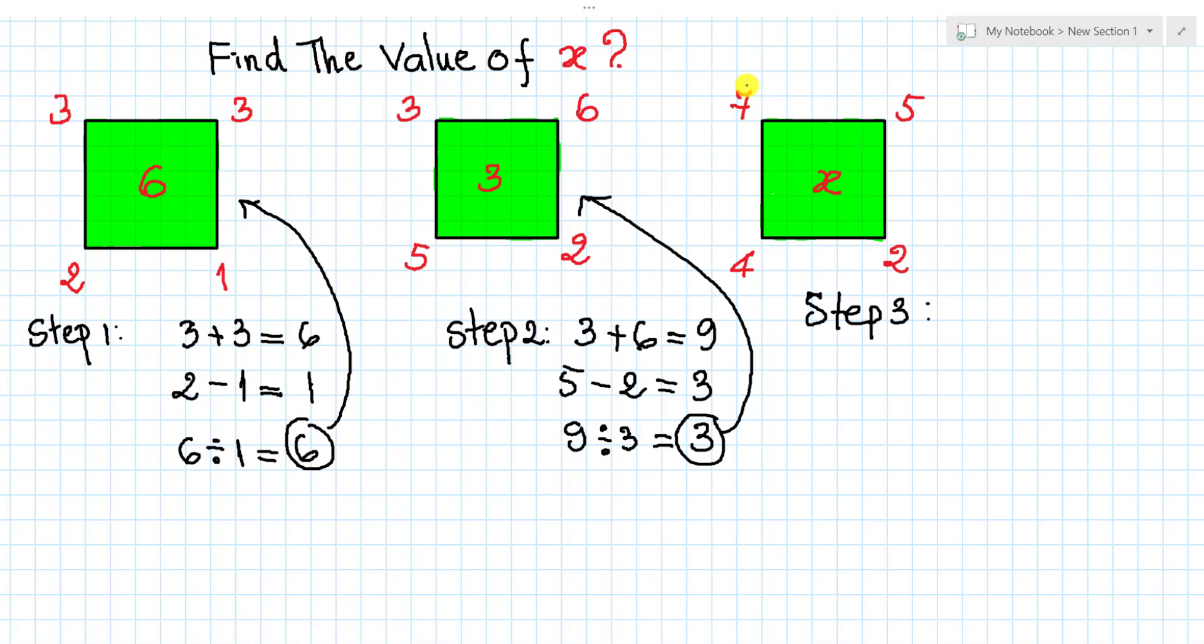We see this number 7 and 5, so I can sum them: 7 plus 5 equals 12. And then this 4 and 2, I can subtract it: 4 minus 2 equals 2. And then I divide 12 by 2. We get 12 divided by 2 equals 6.